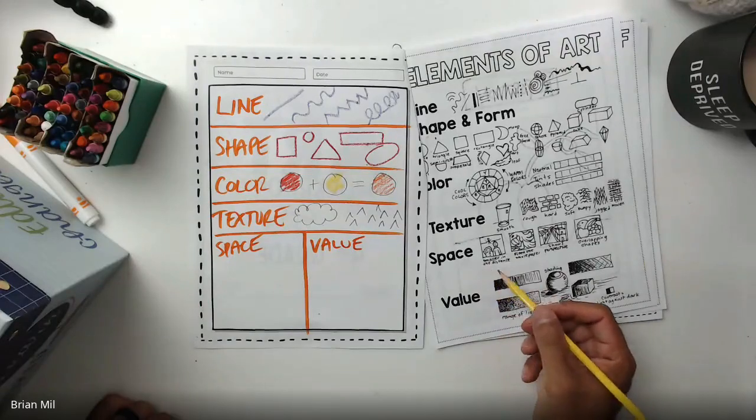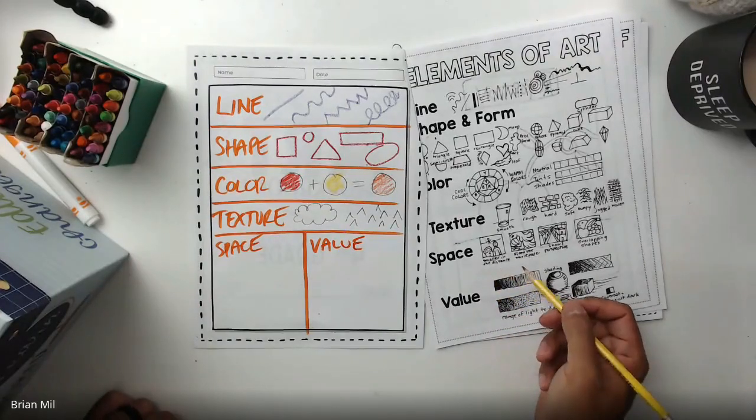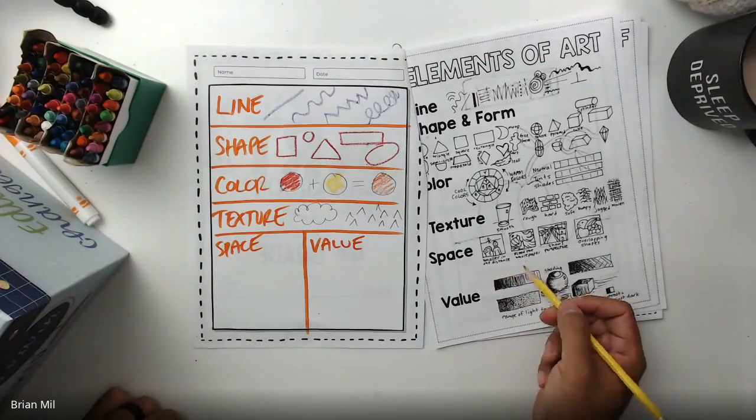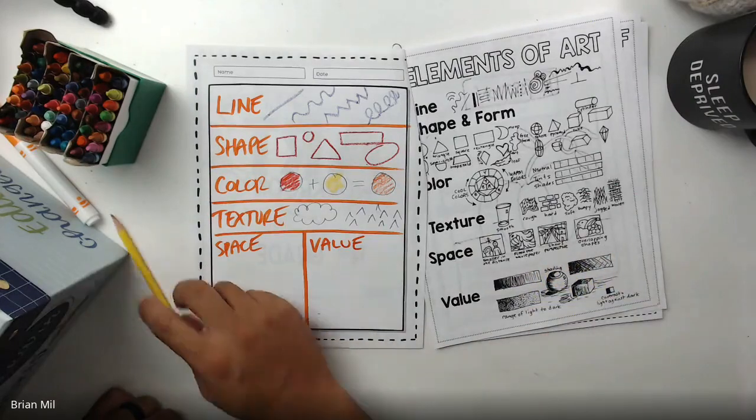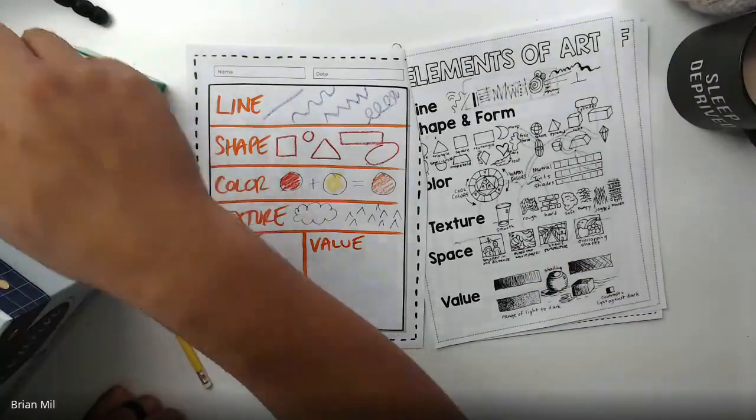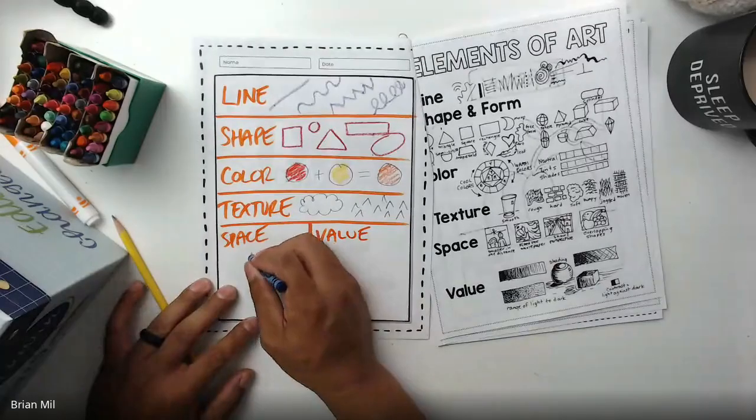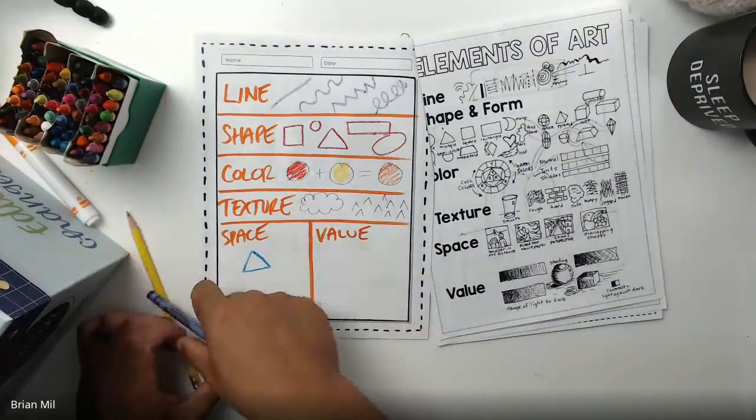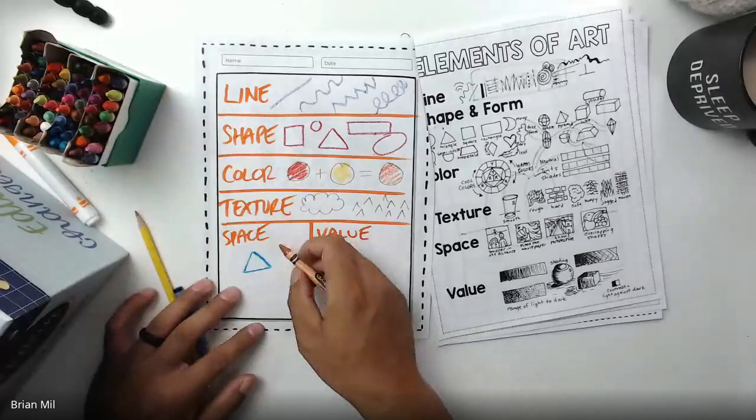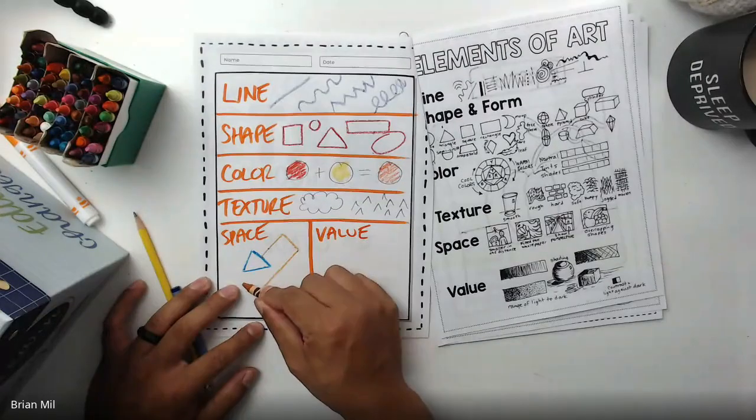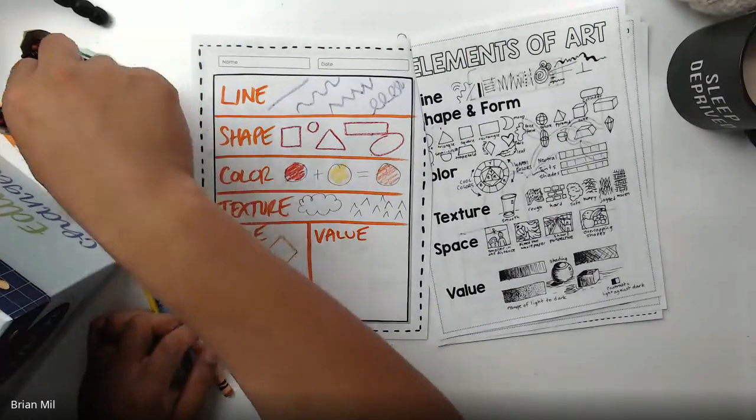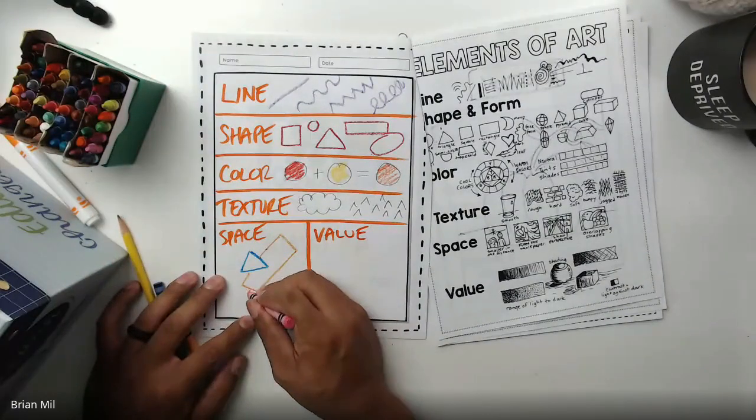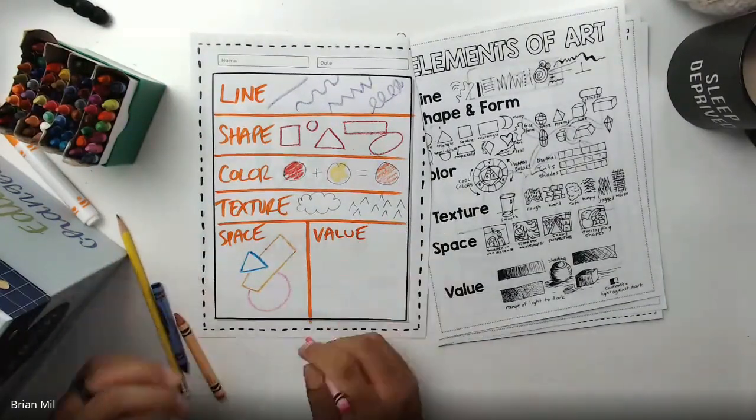For space, it gives you examples. Smaller in the distance. Fill the paper. Show its perspective or overlapping shapes. To save time, I'll do something super easy. Basically overlapping shapes. So the triangles over the rectangle and then they're all over the circle. Super simple.